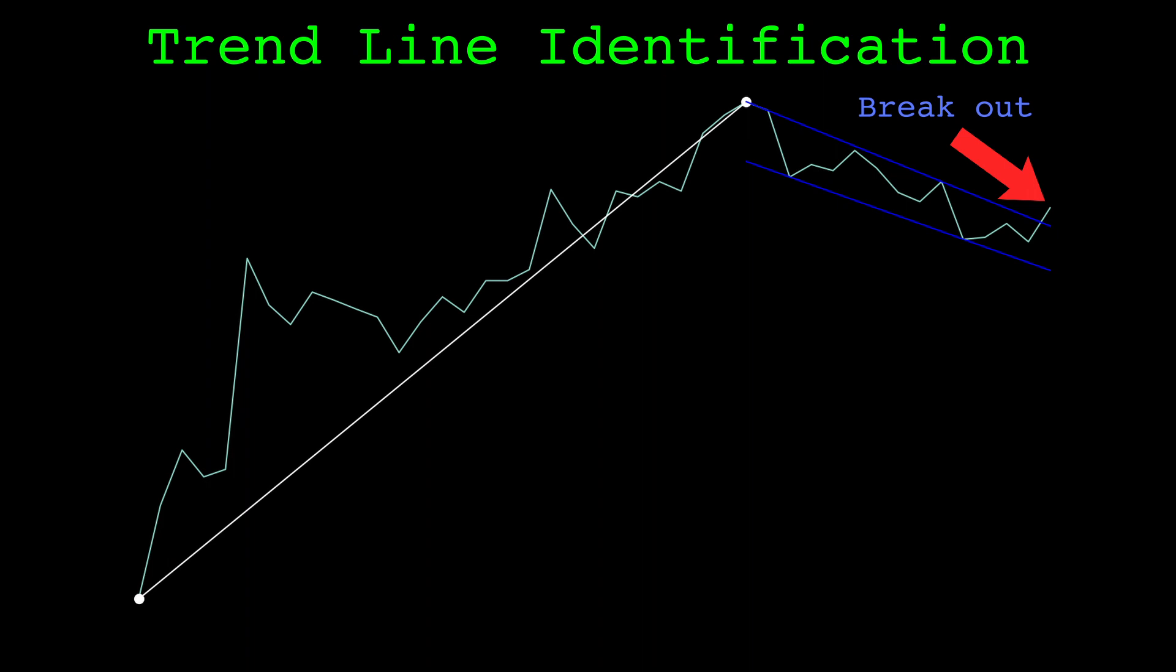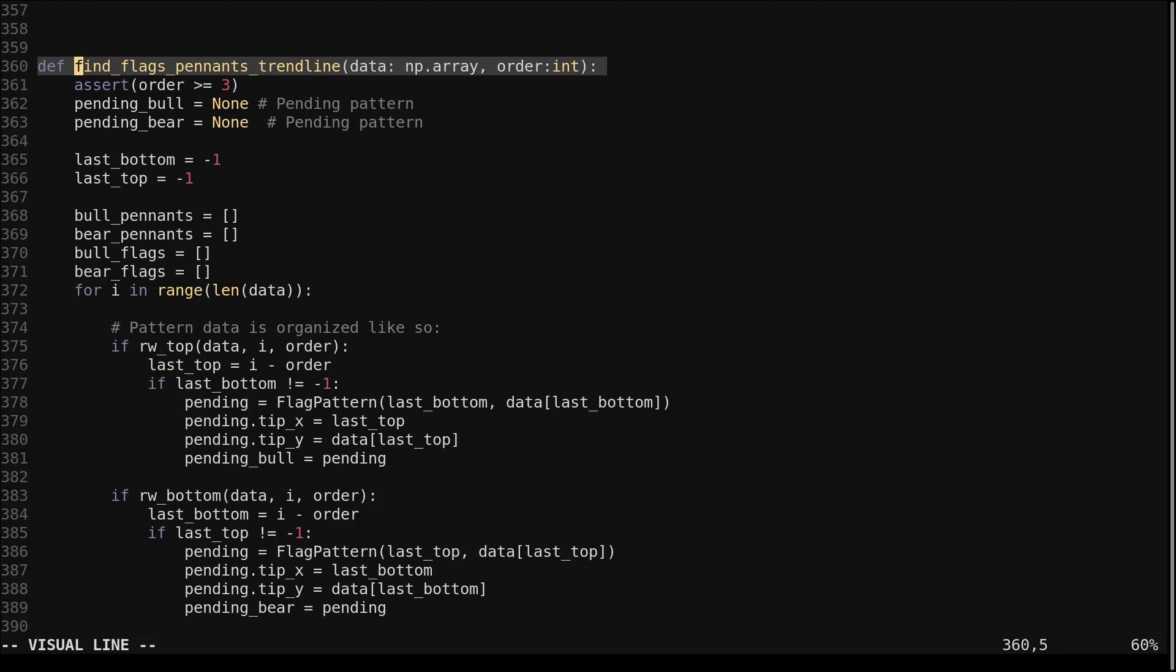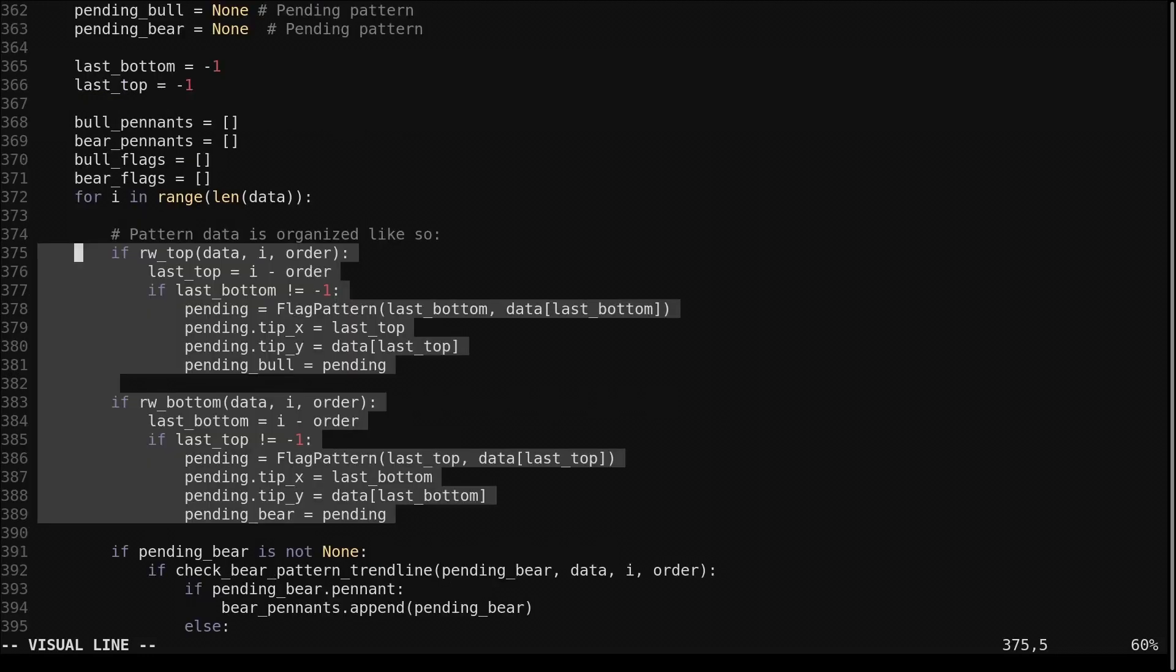Let's look at the code. The second version of flag pattern recognition is implemented in this function. It's very similar to the previous version, except we draw the pole between adjacent local bottoms and tops. Pending bull flags are triggered on a found top, and pending bear flags are triggered on a found bottom. We record the tip coordinates, as the found top or bottom will serve as the pole tip.